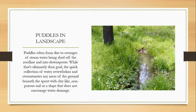Puddles in Landscape: Puddles often form due to overages of stormwater being shed off the roof line and into downspouts. The quick collection of water overwhelms and oversaturates any area of ground beneath the spout with clay-like, non-porous soil, or a slope that does not encourage water drainage.